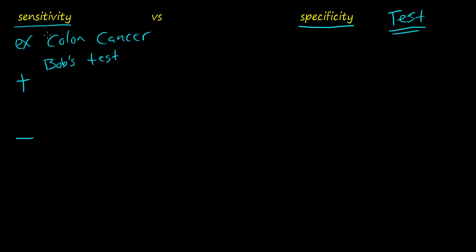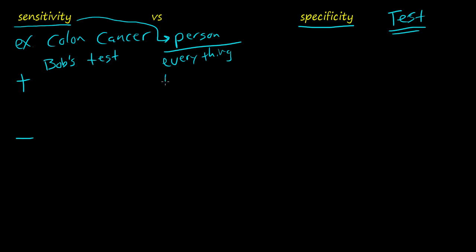So if Bob's test comes back sensitive, let's think about sensitivity this way. Think about it like a sensitive person in everyday life — someone who is sensitive means every little thing hurts their feelings. Someone could smirk at them wrong or not say hi to them, and they think that person hates them. A person that is sensitive reacts to everything.